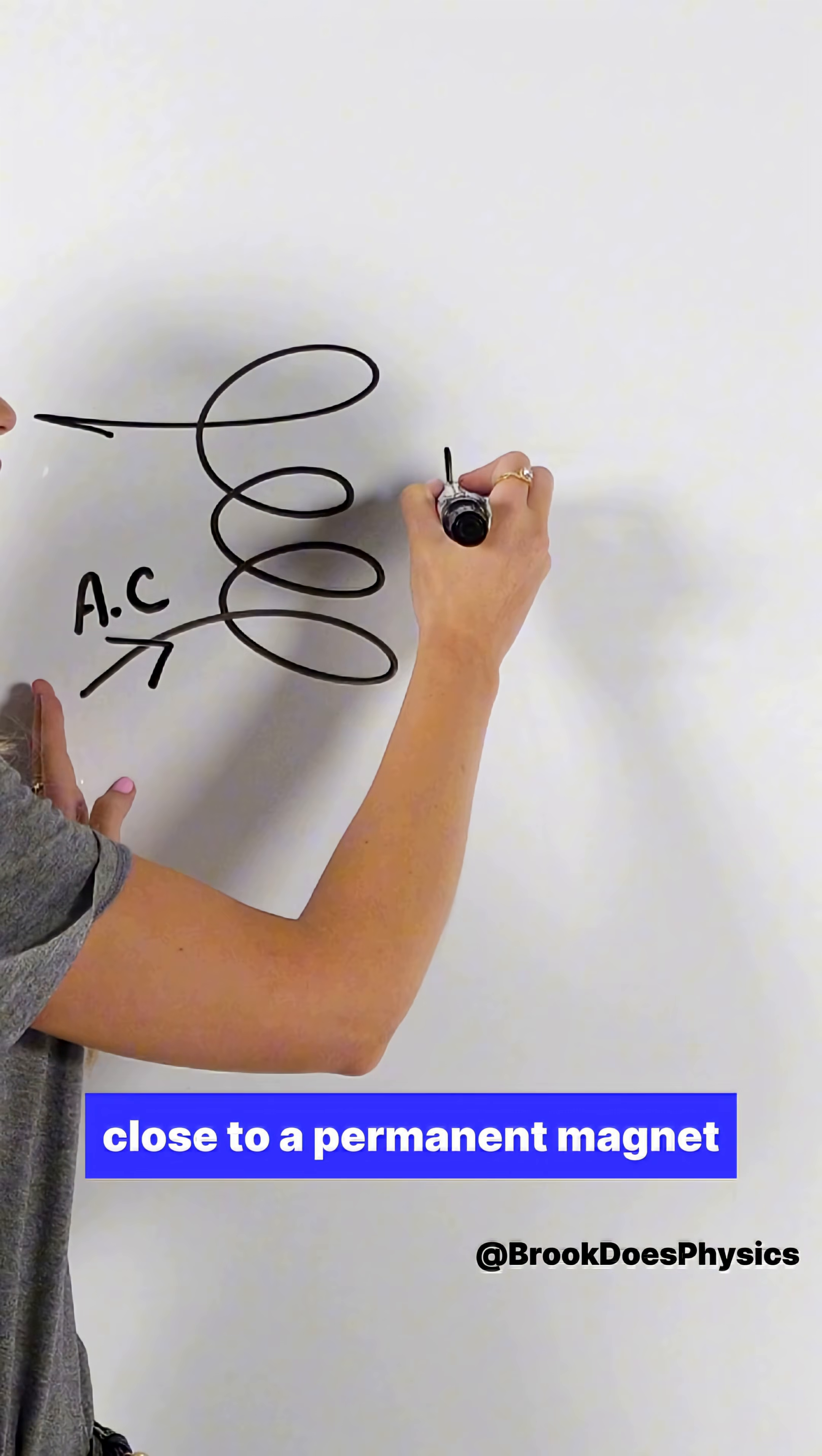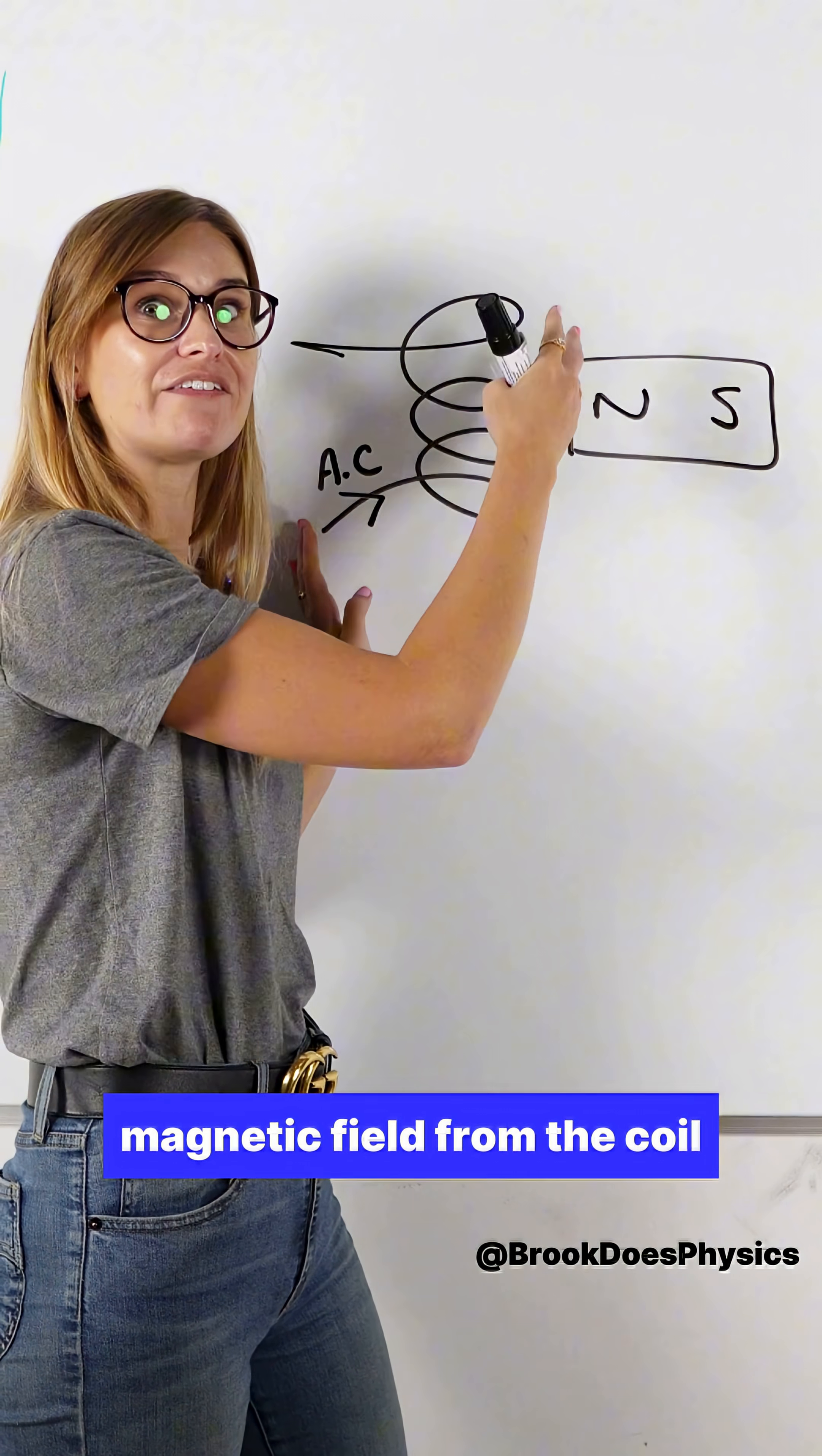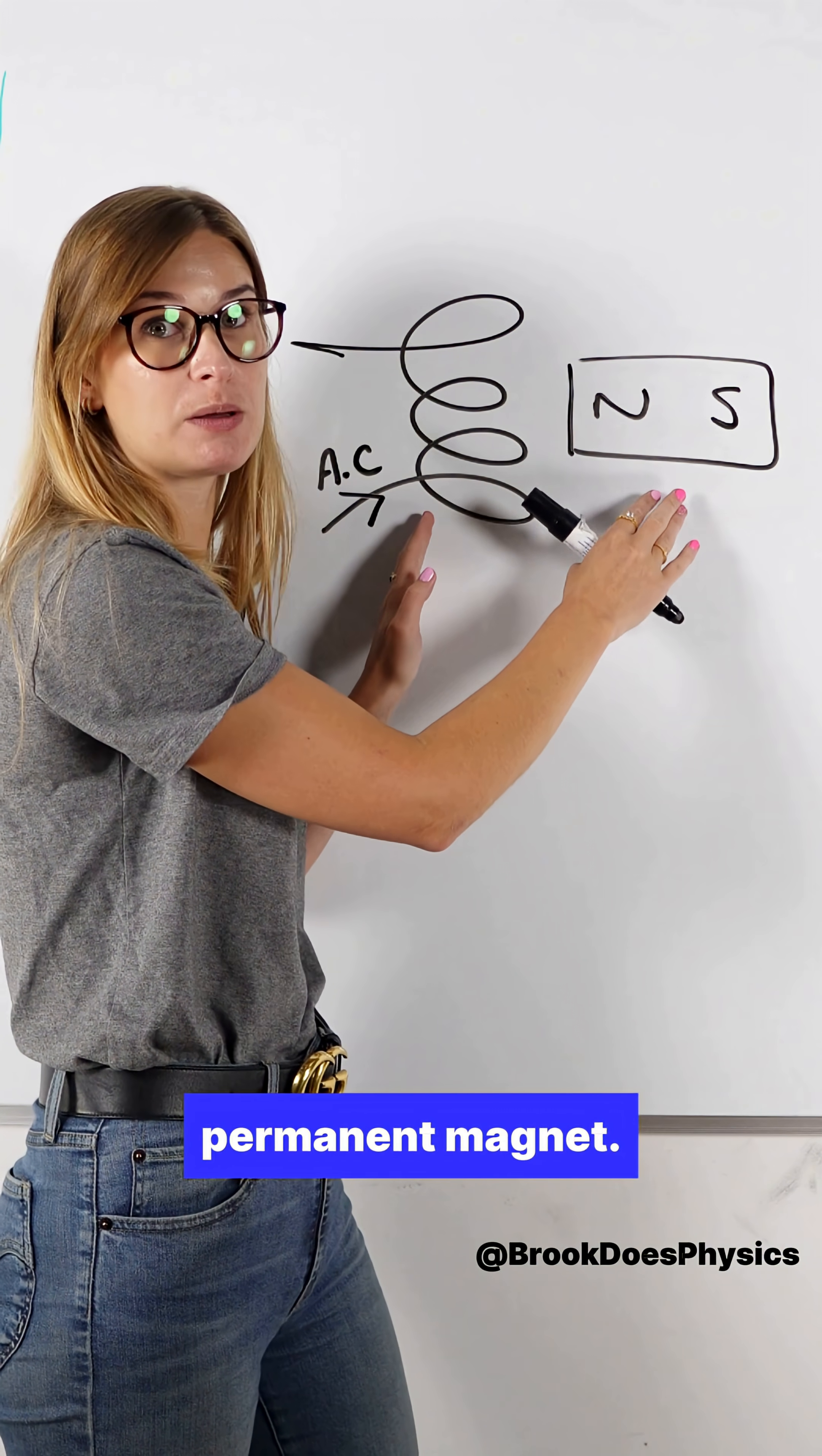This coil is then close to a permanent magnet, causing that coil, the magnetic field from the coil, to be attracted and repelled, to be pushed and pulled towards this permanent magnet.